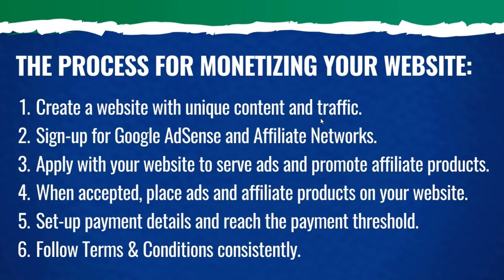So we want to start by creating a website, and usually I recommend at least 20 unique blog posts — unique pieces of content on your website — before you ever even sign up to apply to Google AdSense or any other affiliate channels. Once you do create a website and you do have some unique content, you want to sign up for Google AdSense and any affiliate networks with programs that you want to promote.